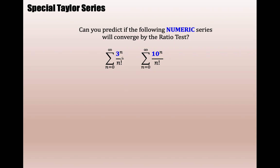Thinking about the warm-up: can you predict if the following numeric series will converge by the ratio test? Remember, we did the ratio test and got the limit of the ratio between consecutive terms to go to zero, giving us convergence because we were bottom heavy. The only difference in these two series is that you'll end up with a 10 in the numerator instead of a 2. The ratio test will also give you zero — you'll be bottom heavy and your numerator will just be a constant. Both of these are numeric convergent series.